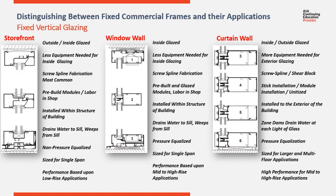Now, if we look at these attributes and start to group them together, you can see in blue the attributes of a storefront system that are also part of a window wall system. These are attributes that make a storefront system more economical to use, and those economical features have been integrated into a window wall system. Window wall also shares attributes with curtain wall — ones that tend to make it a higher performance system. So window wall has a lot of the economics in fabrication and installation from storefront, yet shares higher performance closer to that of a curtain wall because it's used in higher applications.